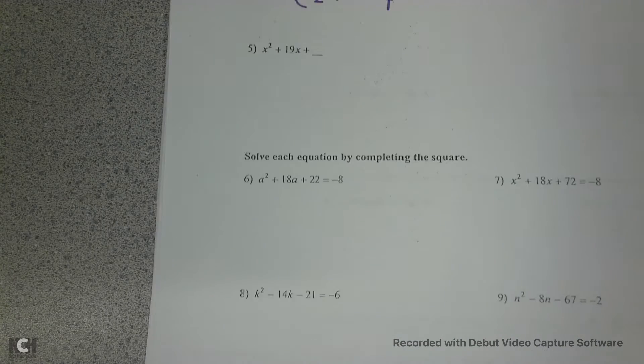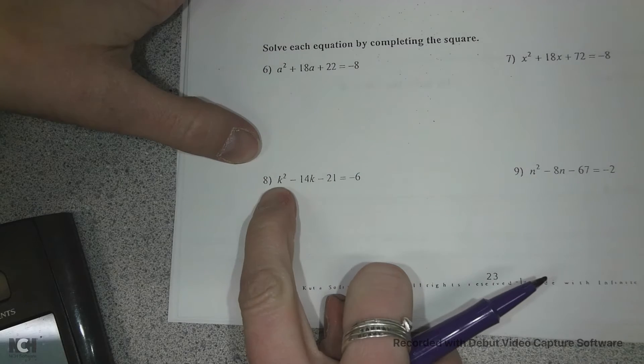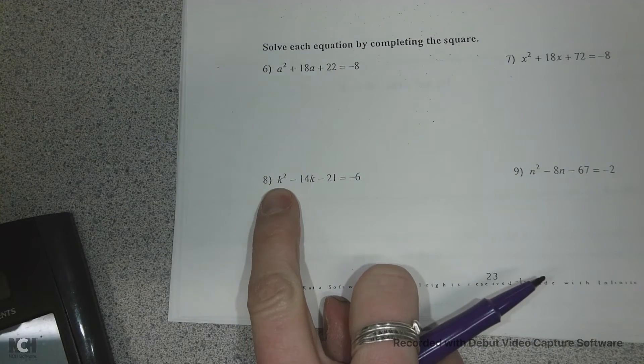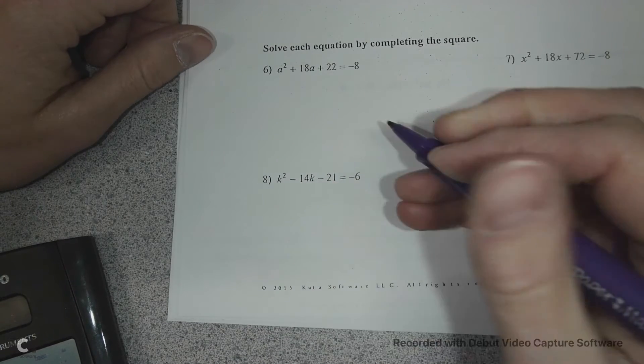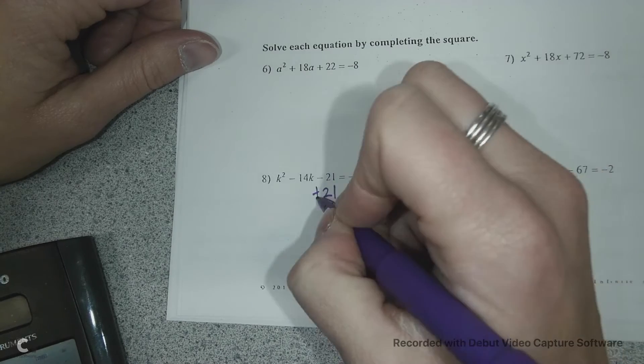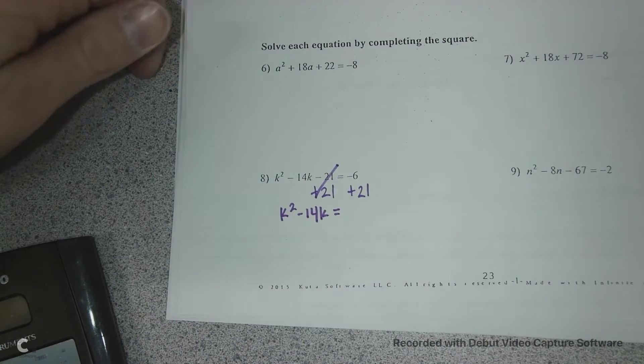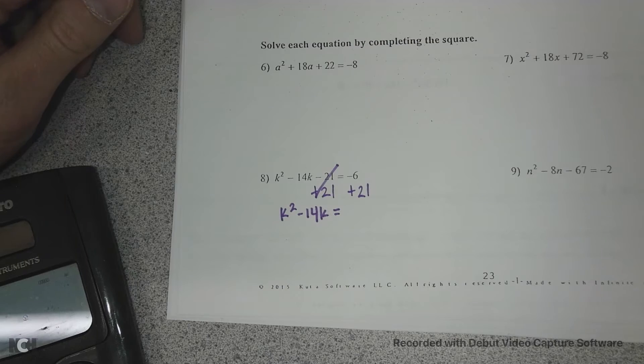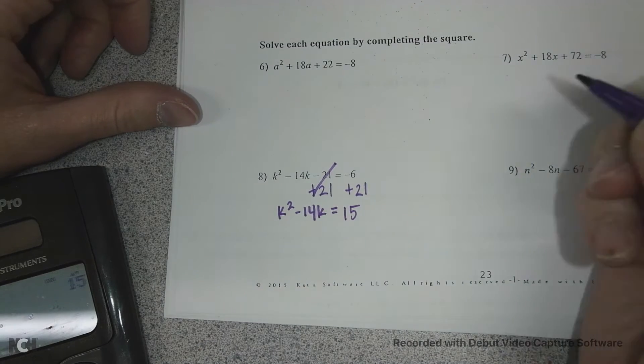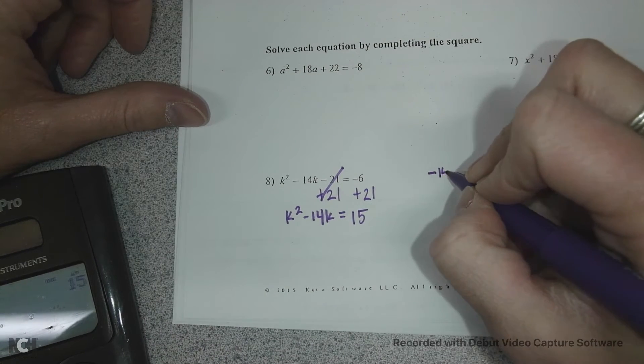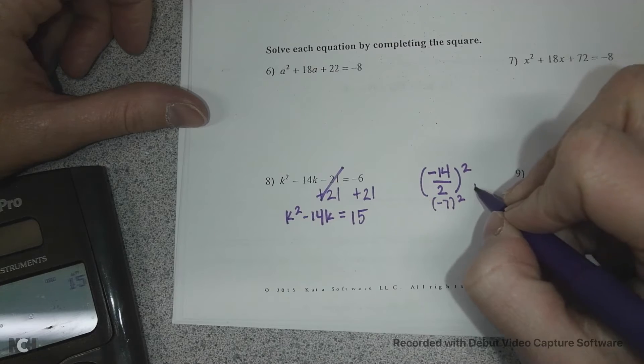Let's look at number 8. Okay, so number 8, if we remember our steps, the first thing we need to do is look at our a. Our a value is 1, so we're not going to mess with that. Then the next thing we need to do is we need to get this in the correct form, so we've got to add our 21 to both sides. We have to move our c over. So we have k squared minus 14k equals negative 6 plus 21 is 15.